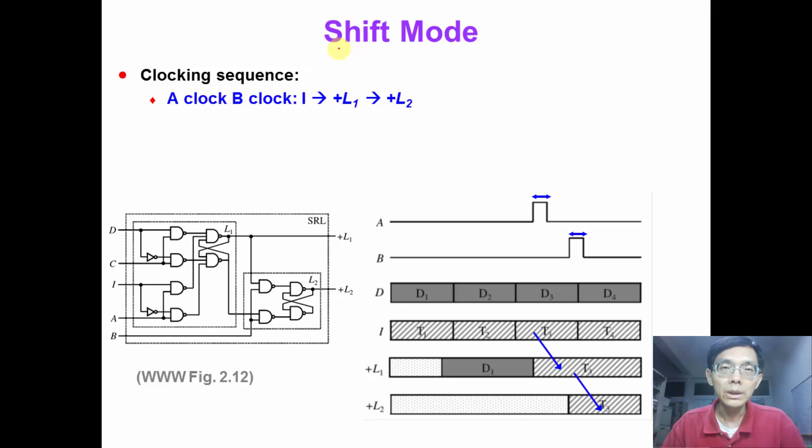Now, when we want to shift in our test data in shift mode, we can apply clock A. When we apply clock A, the scan data is captured from the scan input I to the master latch. When we clock B, the data is transferred from the master latch to the slave latch L2 and also to the output plus L2.